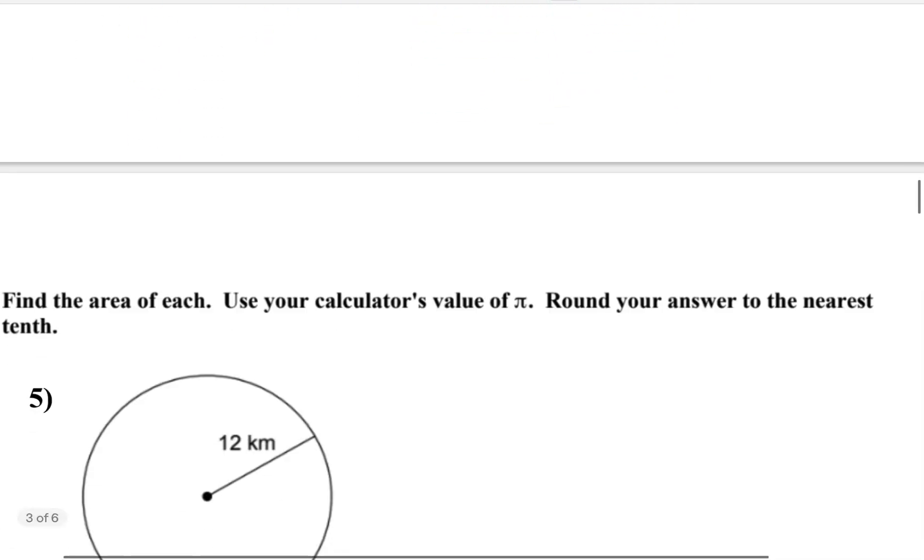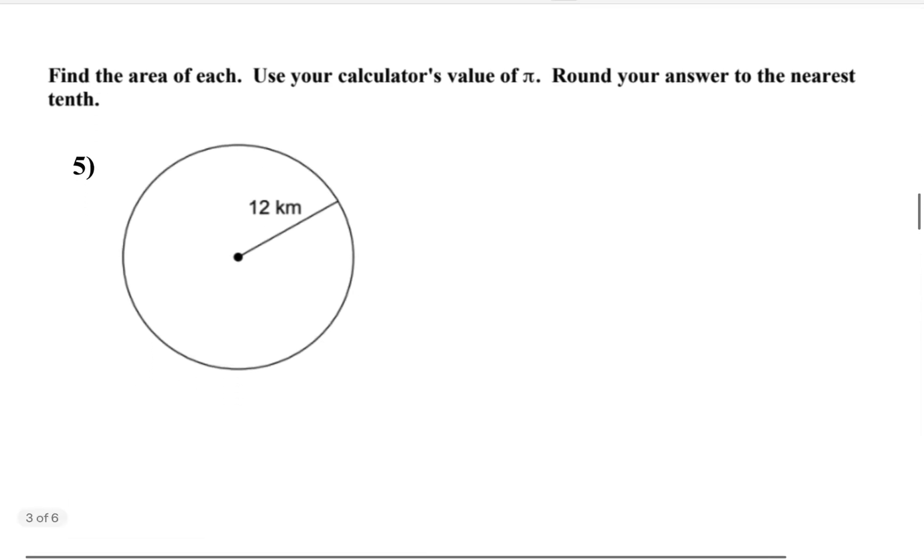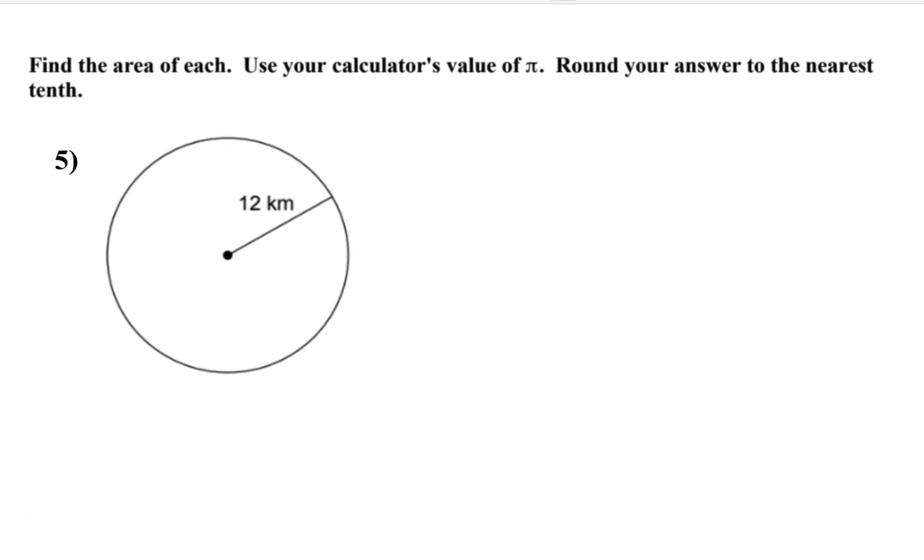All right, let's try another one. This time it is going to be a circle. Find the area of a circle. Find the area of each, use your calculator to use the pi, so we're going to substitute the value of pi. For this it is given in the direction: round your answer to the nearest tenths, so that means one decimal place. So let us write the formula for area of a circle, and that would be pi r squared. We are given with the radius, and so we will substitute. Radius is 12.